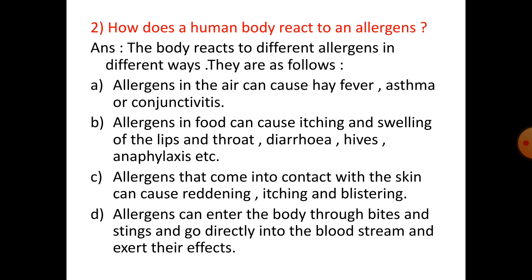Number 2: How does a human body react to allergens? The body reacts to different allergens in different ways. Allergens in the air can cause hay fever, asthma, or conjunctivitis. Allergens in food can cause itching and swelling of the lips and throat, diarrhea, hives, anaphylaxis, etc. Allergens that come into contact with the skin can cause reddening, itching, and blistering.